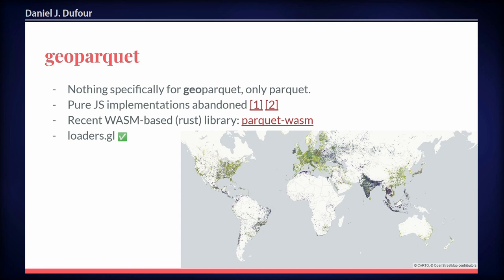Another format that has recently been published as a specification — still not fully finished but showing promise as the step forward for vector data — is GeoParquet. There is nothing specifically implemented yet for GeoParquet in JavaScript. Parquet itself is pretty difficult, so two early implementations were abandoned in favor of a WebAssembly-based implementation called parquet-wasm. That is also used in Loaders.gl, so if you're a DeckGL user or want to go into WebGL-based visualization, Loaders.gl might be the place to go, as it's also available for other formats like FlatGeoBuf.